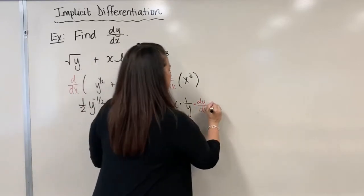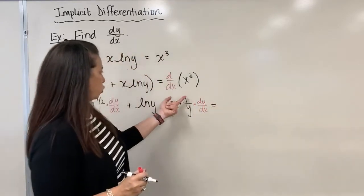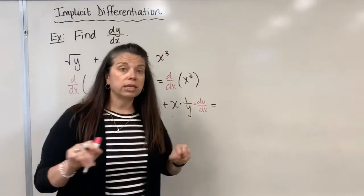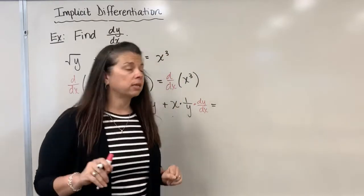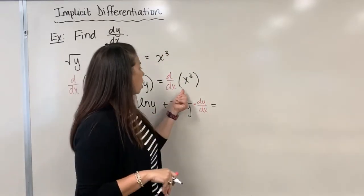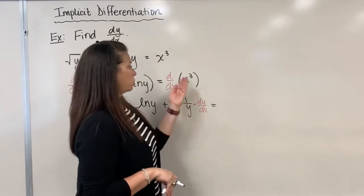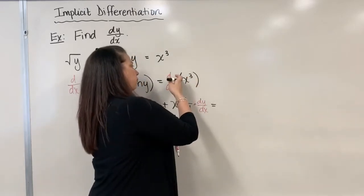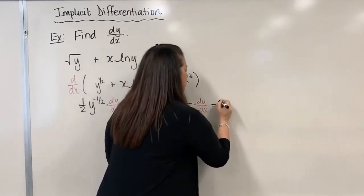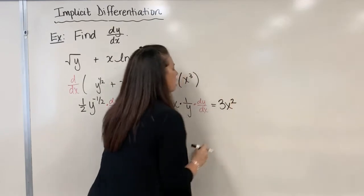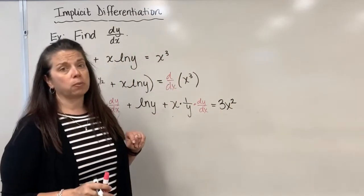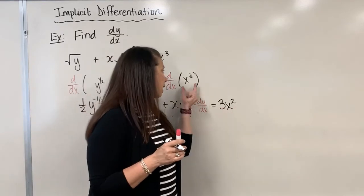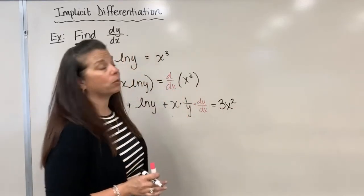Continuing on, the right side equals the derivative of x cubed. There are no y's in that term, so we differentiate as usual: bring the power down in front and subtract one, giving us 3x squared. We do not need the dy/dx notation here because we were differentiating an x term with respect to x.